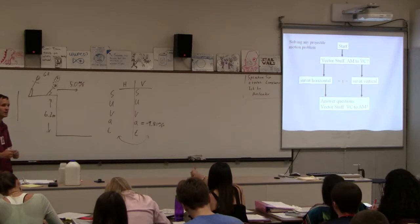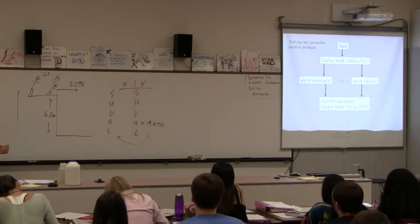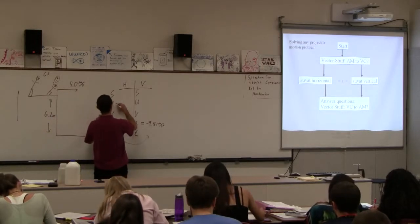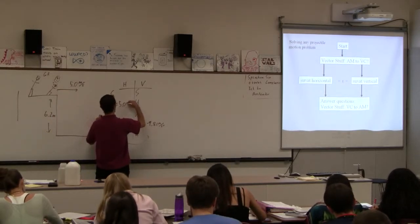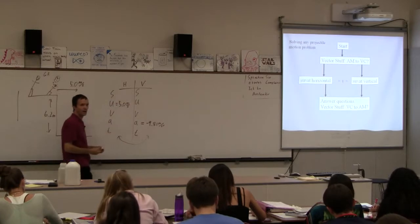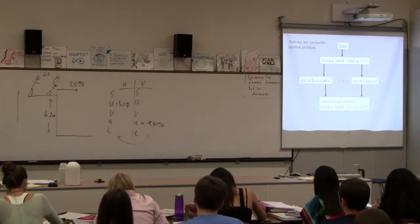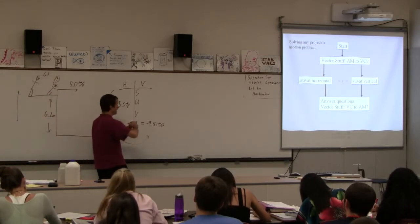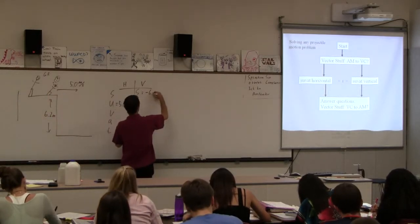For horizontal, is it the initial velocity? Yeah, initial velocity horizontally is 5.0. I don't think anyone would argue with that. Negative, right? So negative 6.2 meters.